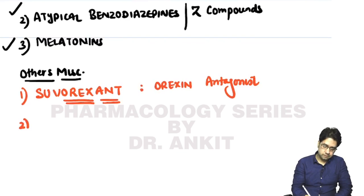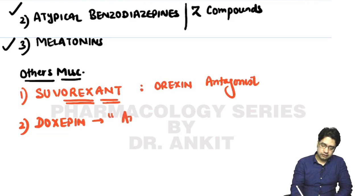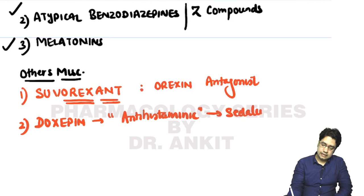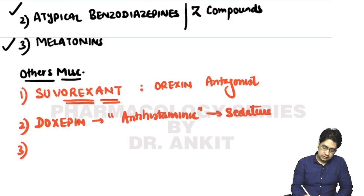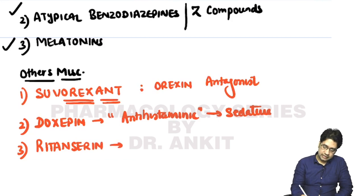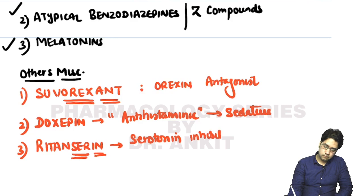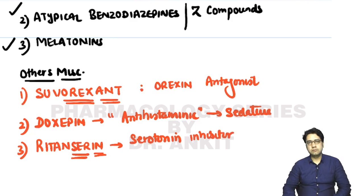The second miscellaneous drug is doxepin, which is an antihistaminic drug. Because of its antihistaminic property it is sedative — antihistaminic drugs are sedative. The third drug is ritanserine, a newer drug; the 'ser' part refers to serotonin and 'in' means inhibitor, so it also induces sleep.